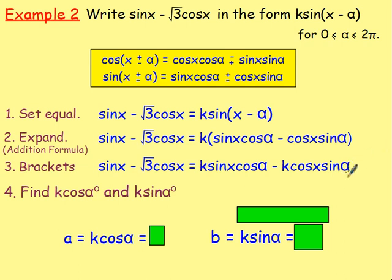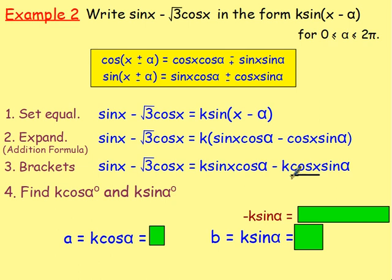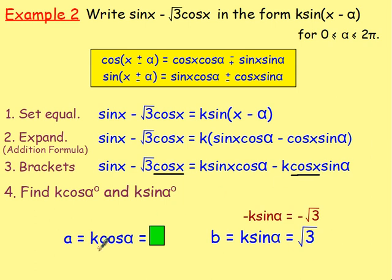To find them, take the coefficients of cos x and sin x. The coefficient of cos x on the right is negative k sin α. On the left, the coefficient of cos x is negative root 3. So negative k sin α equals negative root 3, and multiplying both sides by negative 1 gives k sin α equals root 3. For k cos α: the coefficient of sin x on the right is k cos α, and on the left sin x is just 1 sin x, so k cos α equals 1.